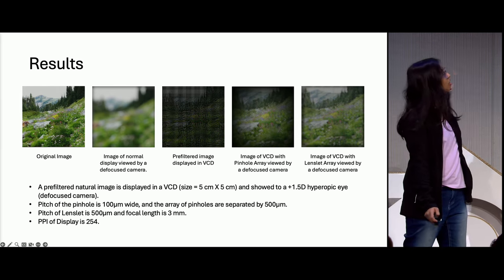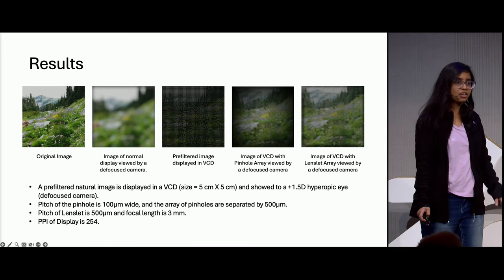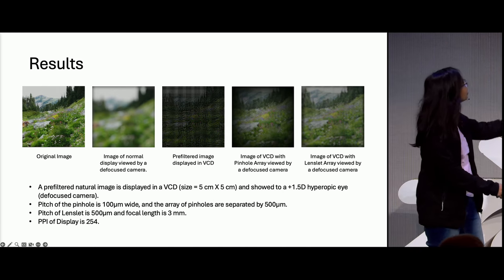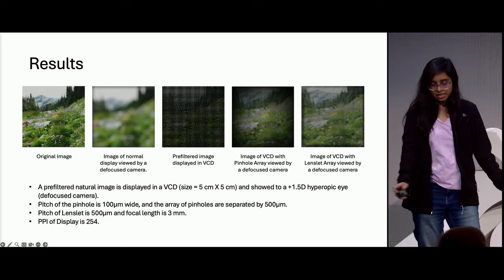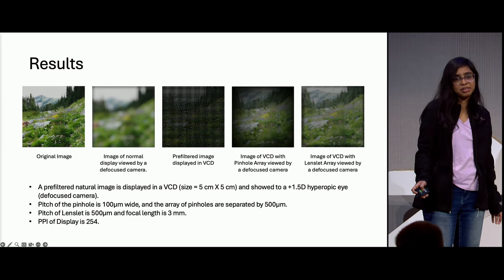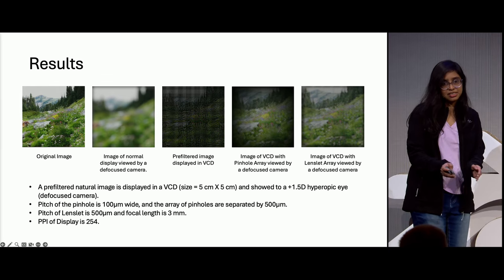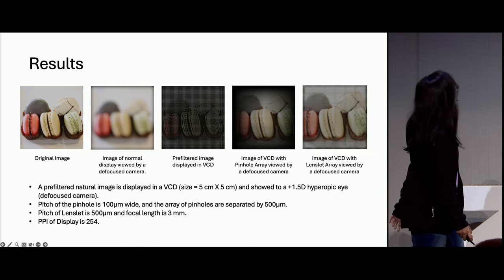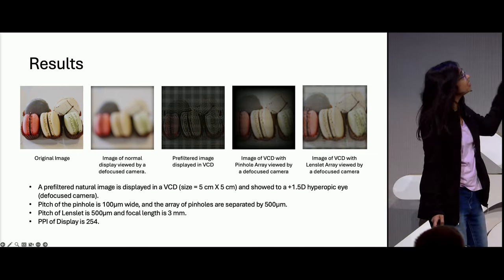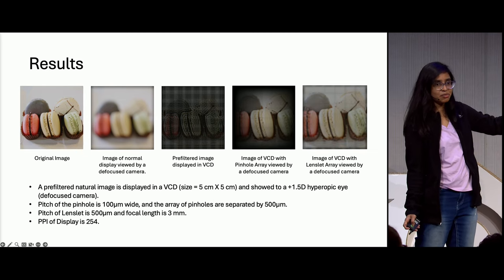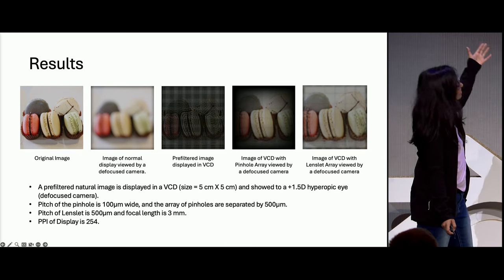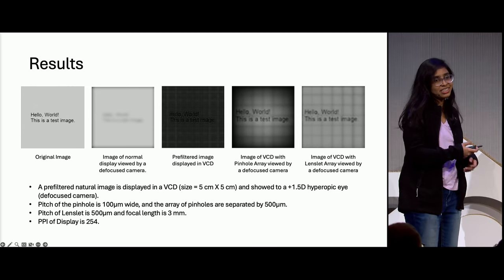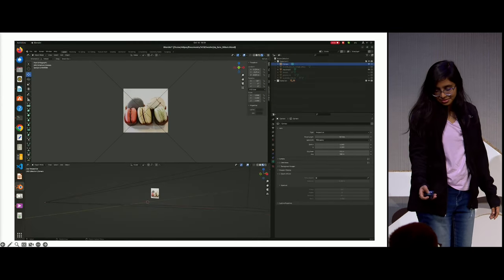By going back with backpropagation, we are able to speed up our iteration of modifying the software. The parameters used: pinhole size is 100 micrometers, separated by 500 micrometers; lenslet pitch is 500 micrometers; pixel per inch is 254. More results in the same order — the last two images are captured within Blender using the system. The test images are still being improved and are in the processing stage.